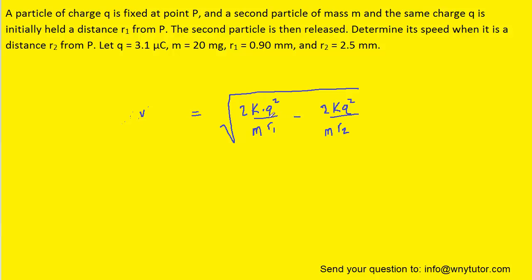The two terms underneath the square root can be simplified by factoring out 2KQ squared over M, since both terms contain that factor.